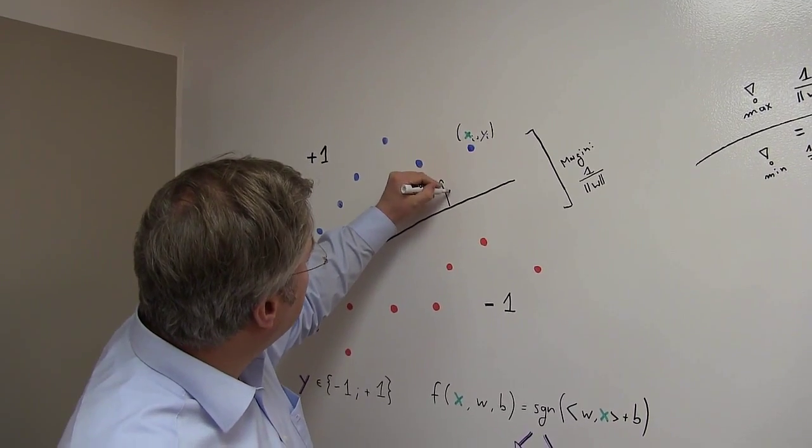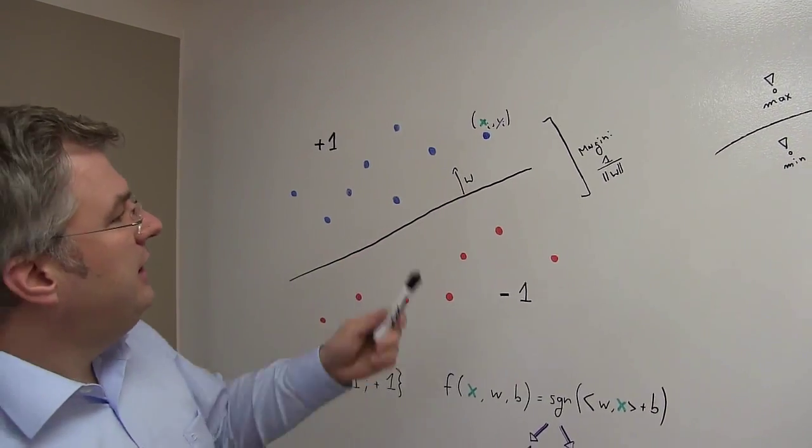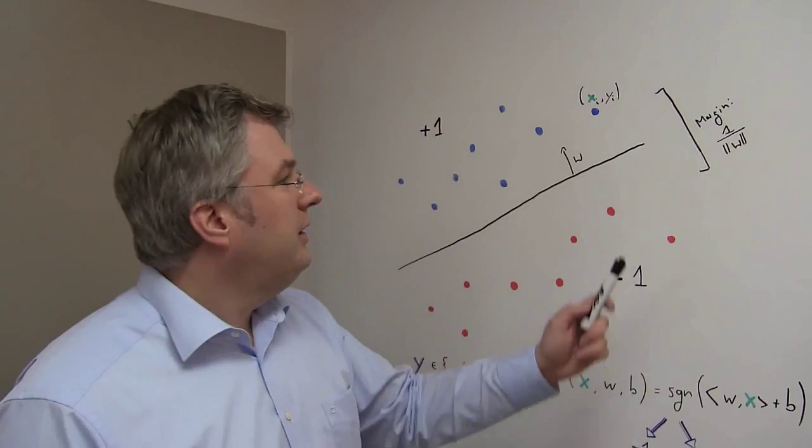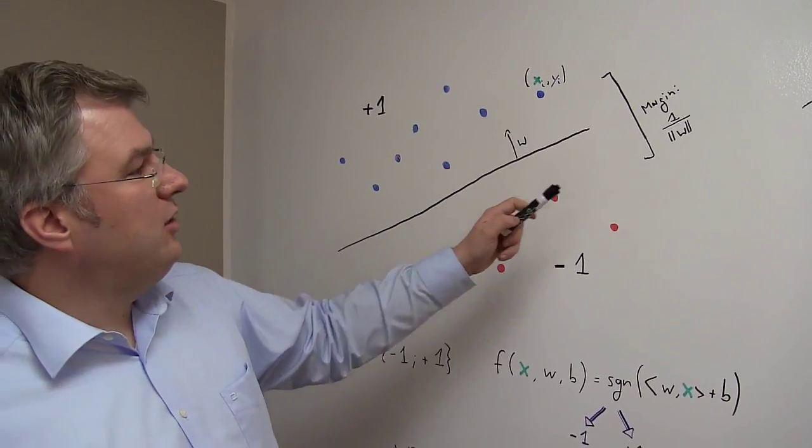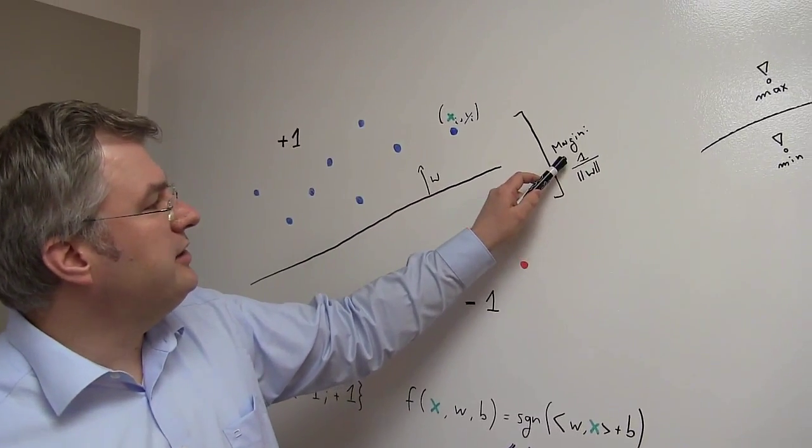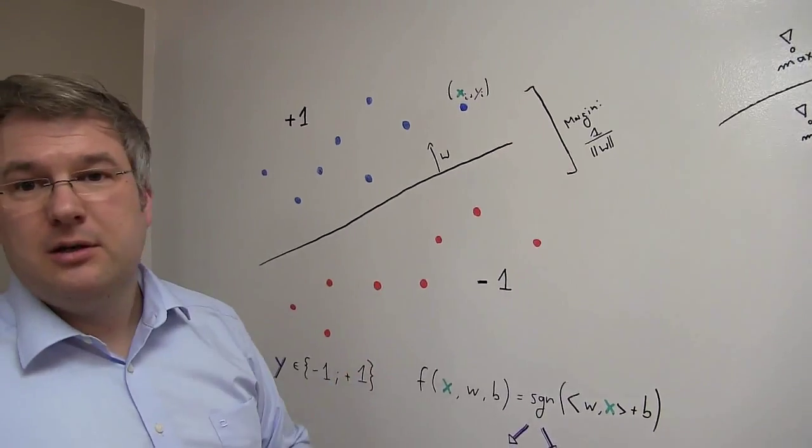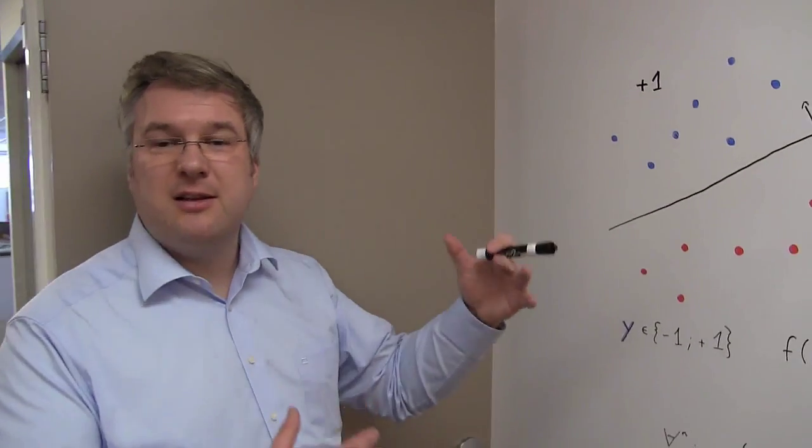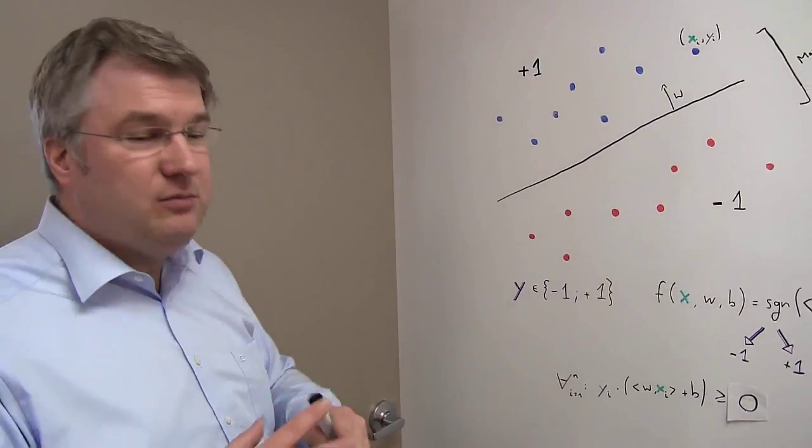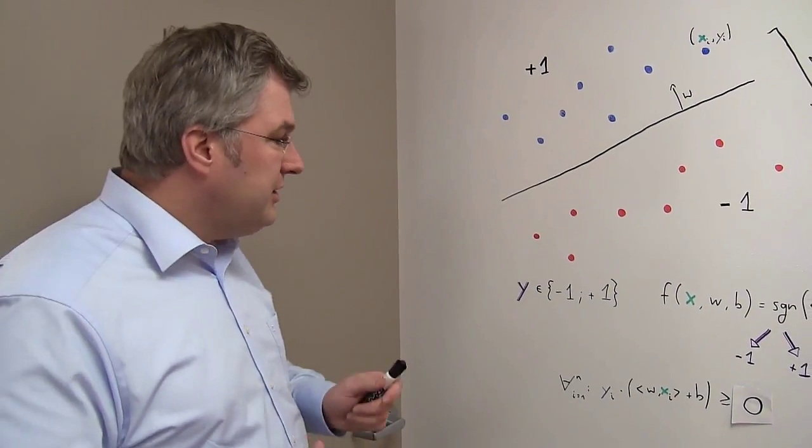This hyperplane is defined by a vector we call W. And just believe me for a second, if we normalize the space in a good way, then we can actually calculate this margin by 1 divided by the norm of W. That's basically the length of this vector. So now let's do a little bit of math.